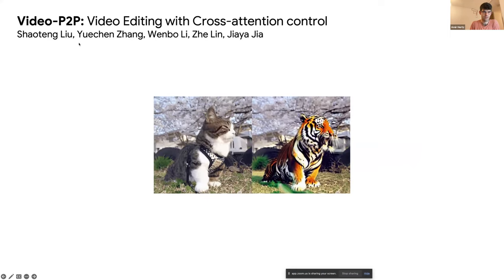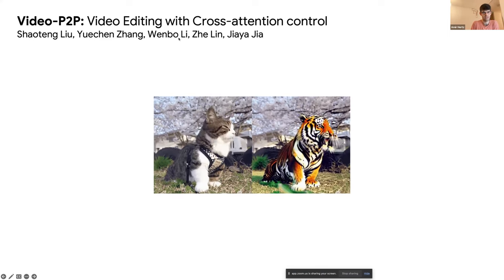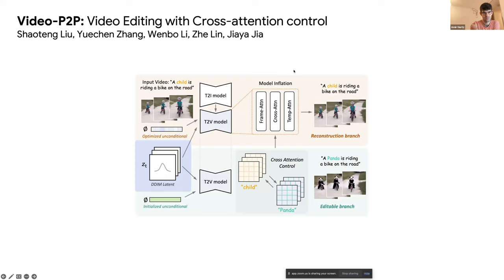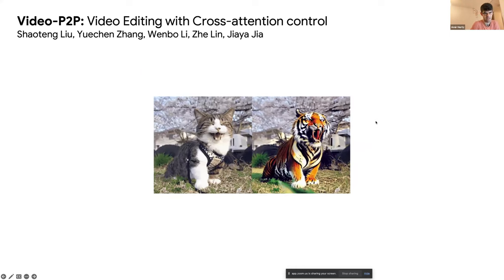Another cool work, also not by our team, extends this inversion and Prompt-to-Prompt idea to videos. They start with a video, fine-tune the diffusion model to fit that video, then use similar manipulation to Prompt-to-Prompt to change things in the video — like changing a rabbit or changing the cat to a tiger in each frame.